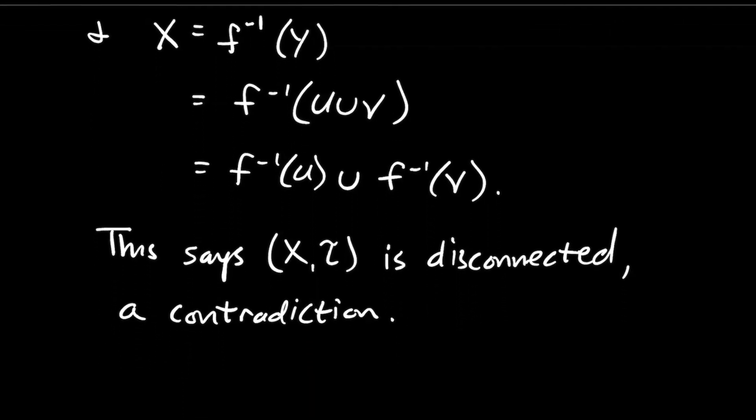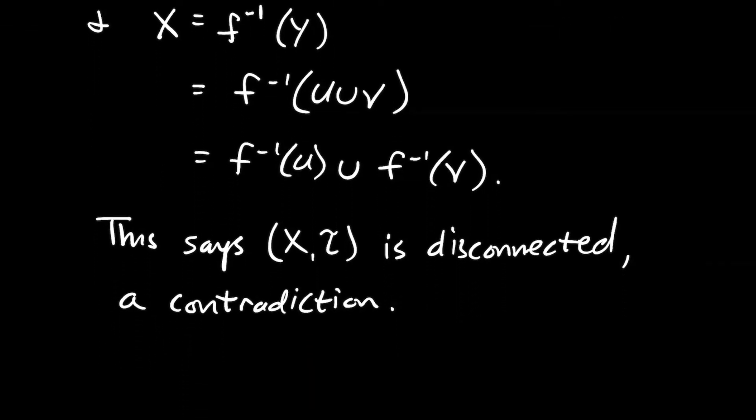Well, if I put it all together, all right, X is the union of two disjoint open sets. Well, that says X with its topology is disconnected, and that's a contradiction. Therefore, Y with its topology had to be connected too.